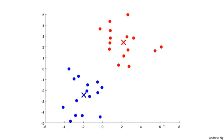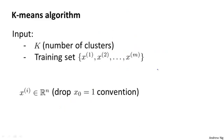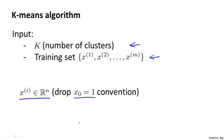Let's write out the k-means algorithm more formally. The k-means algorithm takes two inputs. One is a parameter k, which is the number of clusters you want to find in the data — I'll later say how we might go about choosing k. The second input is the unlabeled training set of just the x's. Because this is unsupervised learning, we don't have the labels y anymore. For k-means, I'm going to use the convention that x_i is an R^n dimensional vector, so my training examples are n-dimensional rather than n+1 dimensional vectors.